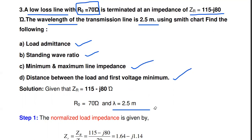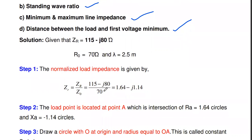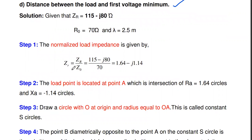The first step is to find the normalized load impedance. The normalized load impedance means we divide the load impedance by the characteristics impedance. So zr_normalized = ZR / R0 = (115 − j80) / 70. Dividing: 115/70 = 1.64 and 80/70 = 1.14. So the normalized load impedance is 1.64 − j1.14.